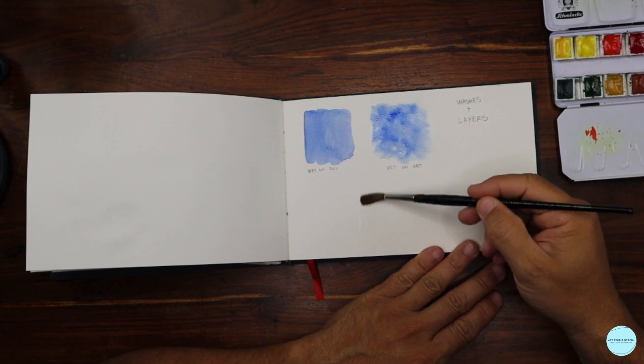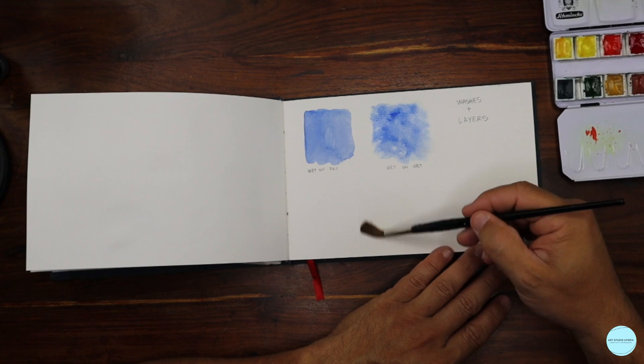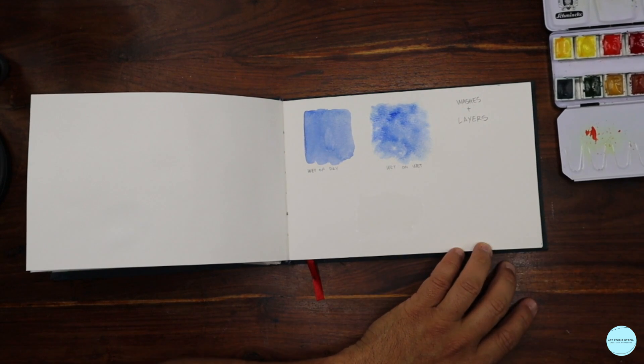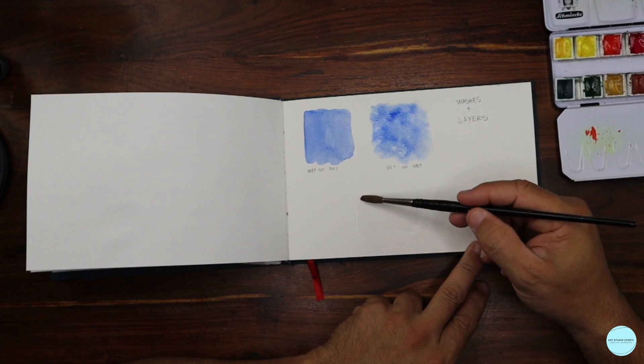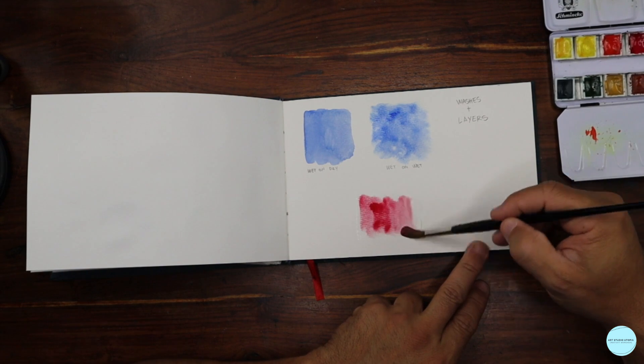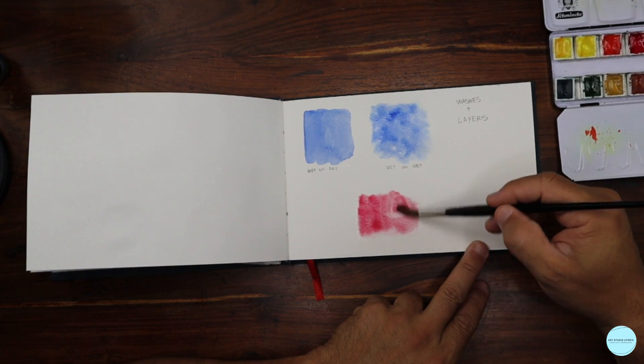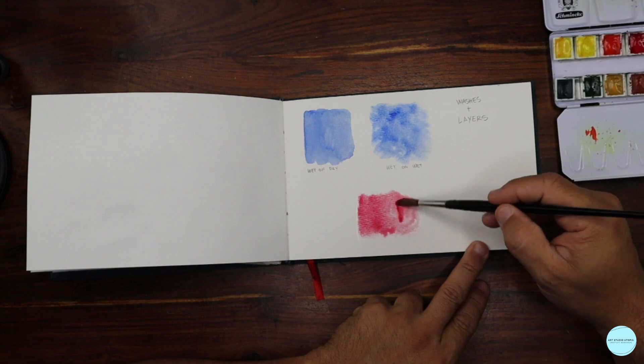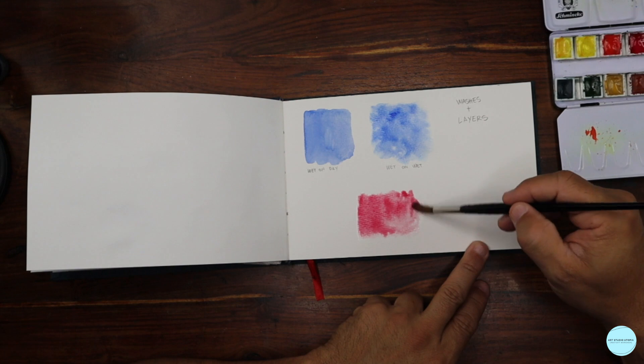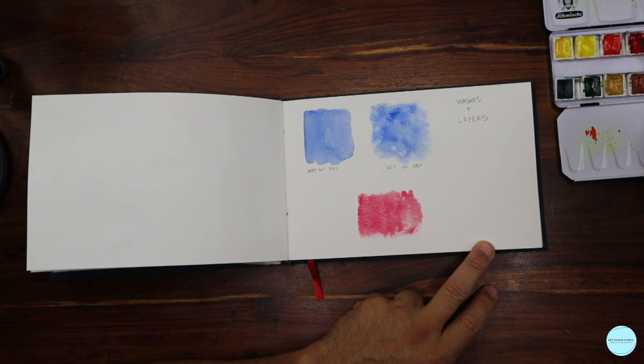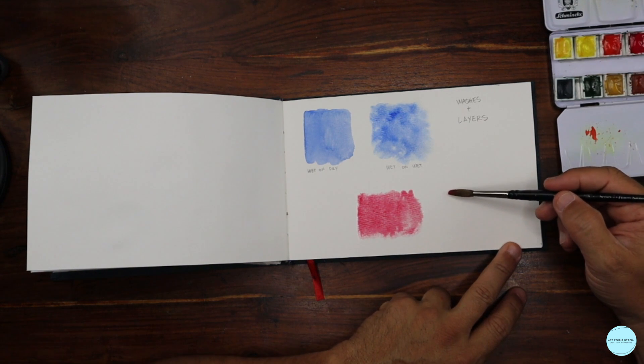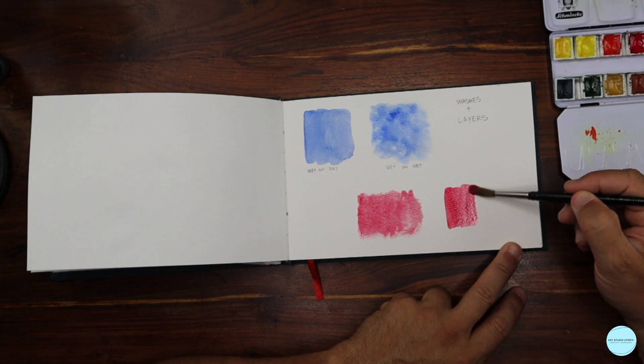Instead of just doing one wash, I'm going to do one more down here. And while I do this one, I'm going to do another wet on wet, and I'm going to use let's say red. So this is just a nice, beautiful wet on wet wash with alizarin crimson red. And with that same color, alizarin crimson, I'm going to create a little bit more deeper consistency, more pigment than water, wet on dry, so it's a little more saturated.